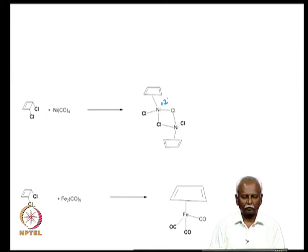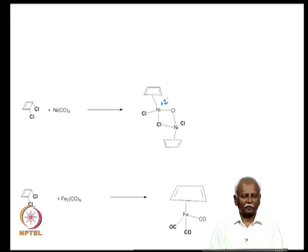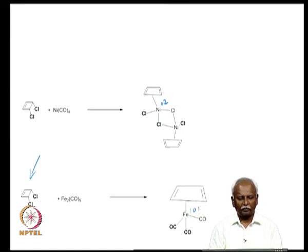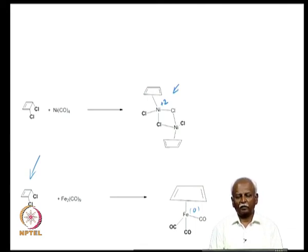One synthetic route uses dichlorocyclobutadiene as starting material. Treating it with Fe2(CO)9 gives an iron(0) cyclobutadiene complex. Alternatively, reaction with nickel tetracarbonyl gives a nickel(2+) cyclobutadiene complex. The corresponding palladium analog can also be made — treating diphenylacetylene with PdCl2 gives a palladium complex with two cyclobutadiene units coordinated to palladium, bridged by palladium–chlorine–palladium linkages.